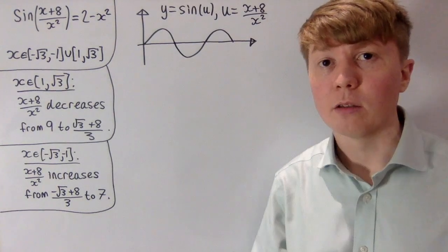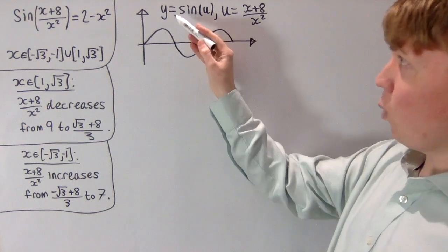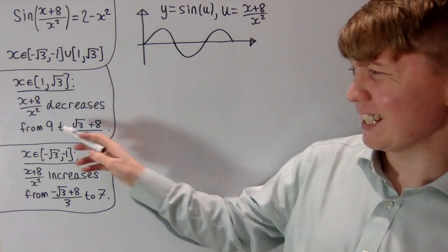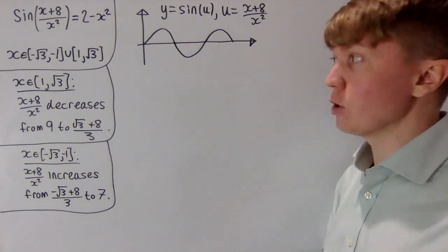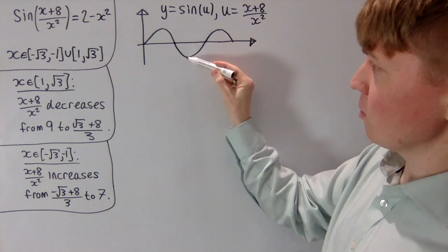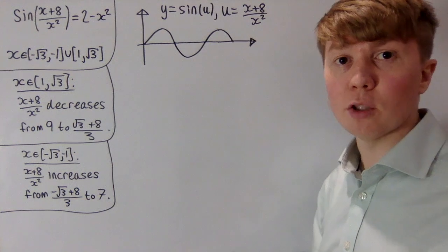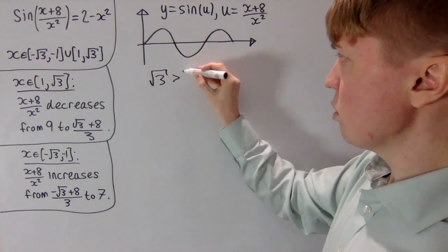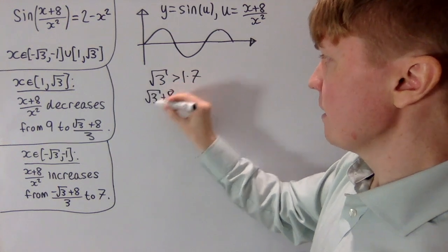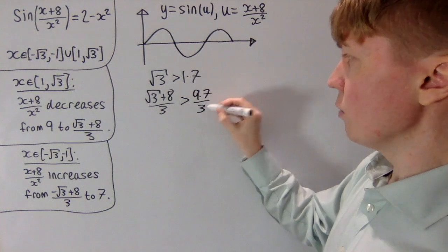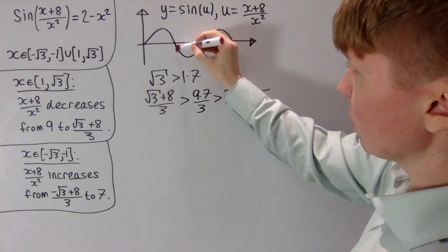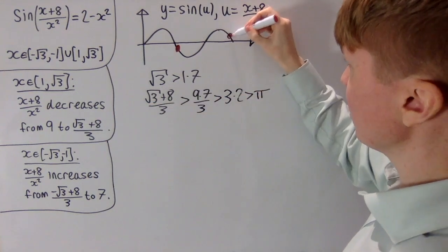To understand sine of (x+8)/x², we draw y equals sine u and think about u equals (x+8)/x². In the first region, u decreases from 9 down to (root 3 + 8)/3. Since root 3 is just above 1.7, this value is just above 9.7/3, which is just above 3.2 — very conveniently just above pi. So on our sine graph we start just short of 3pi and decrease to just beyond pi.